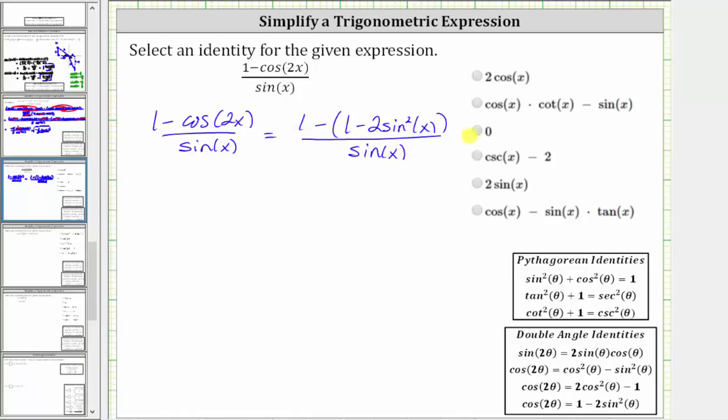The next step is to clear the parentheses by subtracting this quantity, or if it's helpful because of the subtraction, we can think of distributing a negative one. We have one, and in distributing negative one, we have negative one times positive one, which is negative one, which gives us minus one. And then we have negative one times a negative two sine squared x, which is positive two sine squared x, which gives us plus two sine squared x. And this is still divided by sine x.